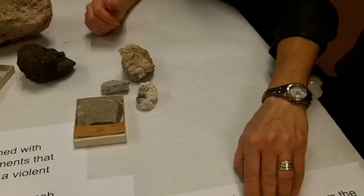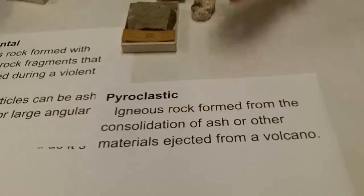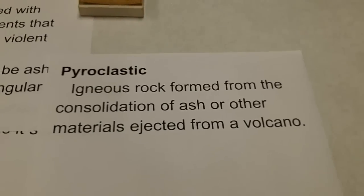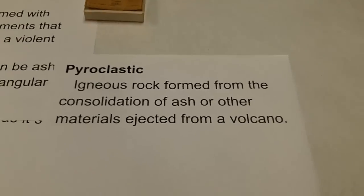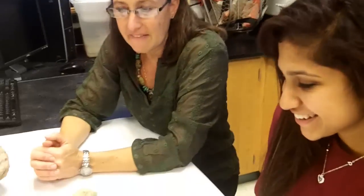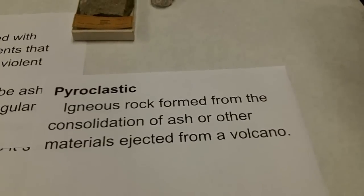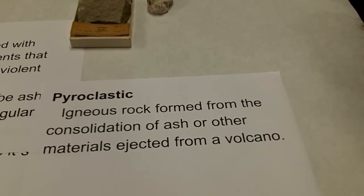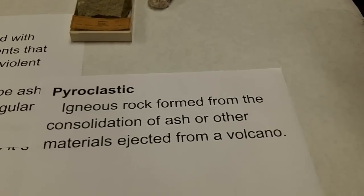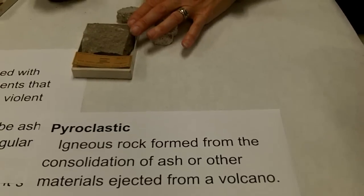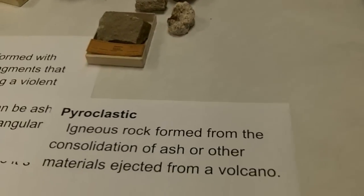The last term I want to talk about is pyroclastic. What do you think the pyro part means? Somebody's a pyromaniac — what are they like? Fire. Okay, so the pyro part is fire and the clastic part is like fragments — little pieces. Pyroclastic is an igneous rock that forms from little bits of ash or other materials that are ejected out of a volcano. So these fragmental rocks are also sometimes referred to as pyroclastic.